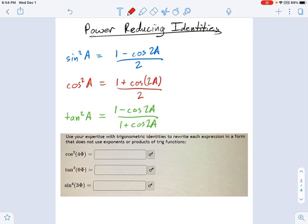And if you look at your angle here in the identity, it's A. But in the problem we're working on, the angle is 4 phi. So that's fine. Just change A to 4 phi anywhere you see it.